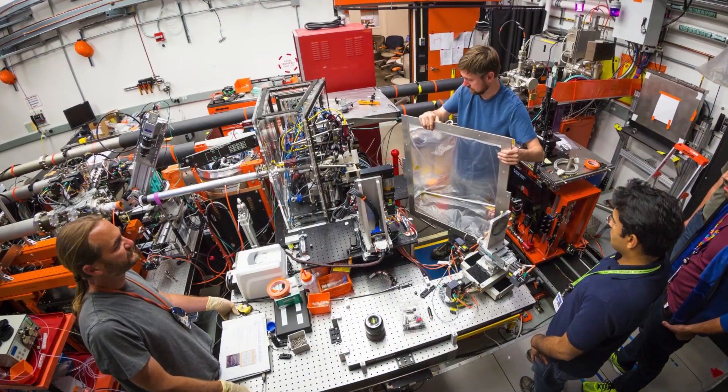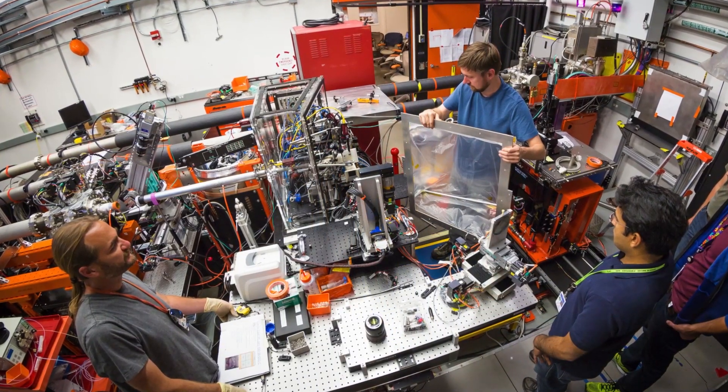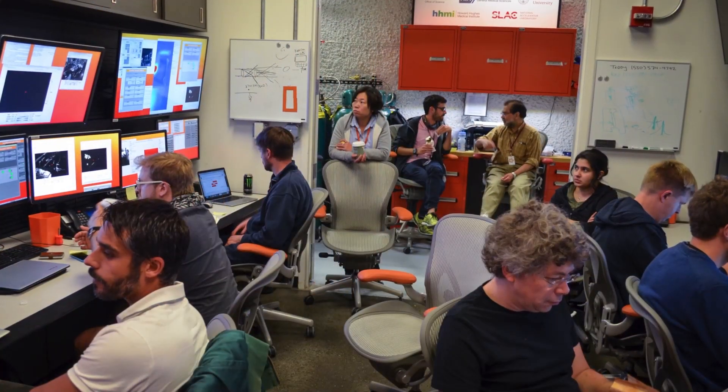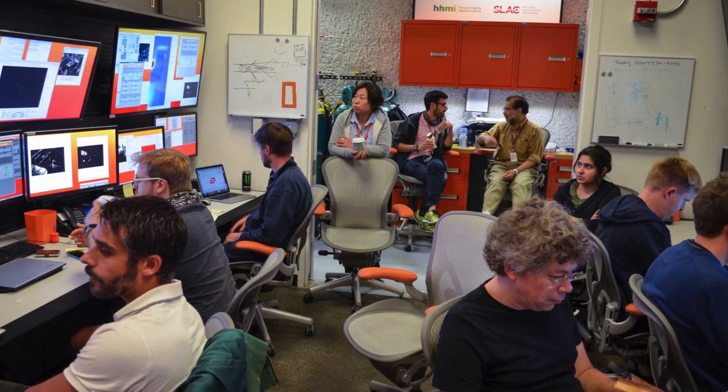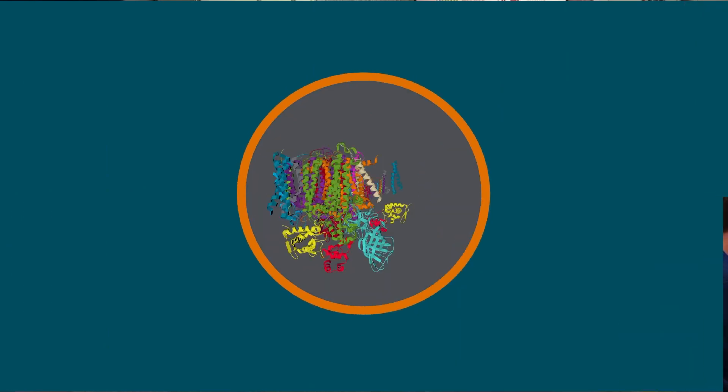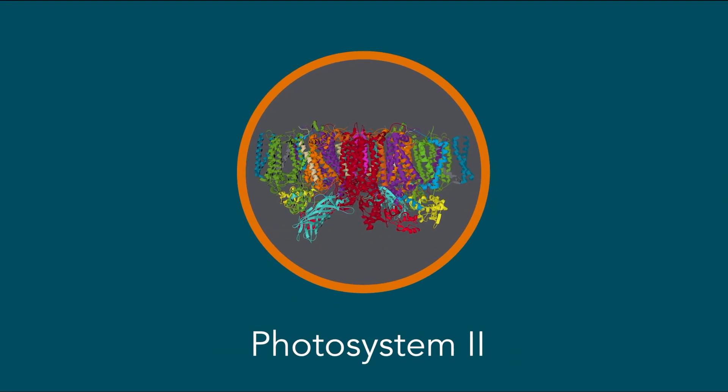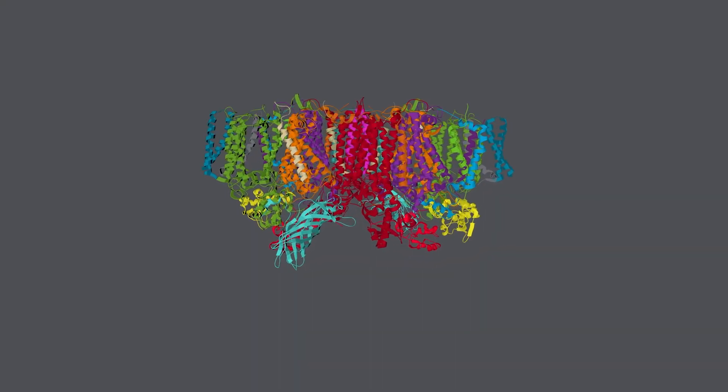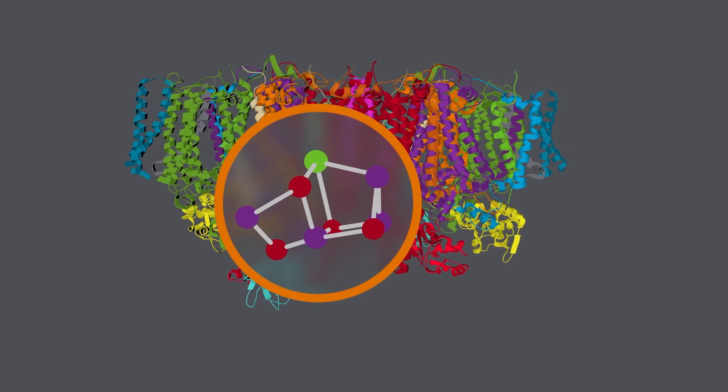These researchers have taken extremely high-resolution images at different stages of the process at room temperature, allowing them to search for how and where the oxygen is produced under real-life circumstances. The researchers specifically studied the protein complex Photosystem II, which produces oxygen from water in a small region of the protein during photosynthesis.